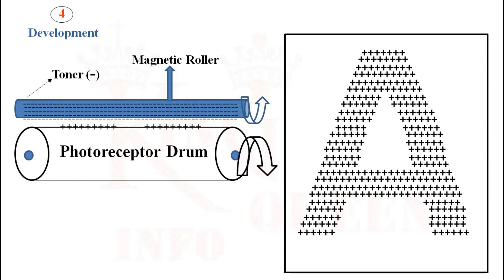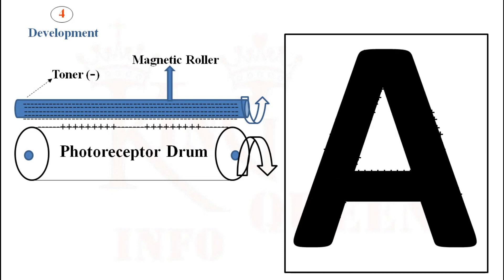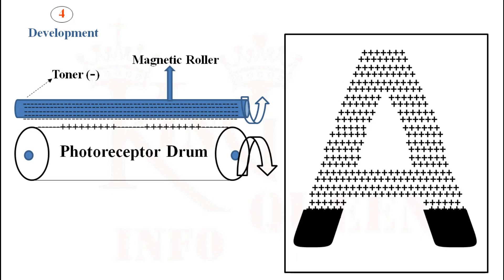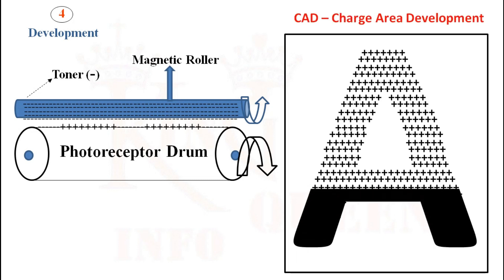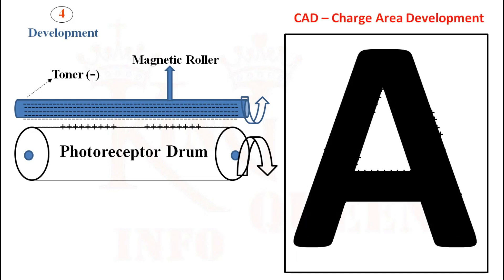This is analog technology, so it is charge area development, CAD. Thus the invisible charged latent image is developed into a visible toner image on the photoreceptor.